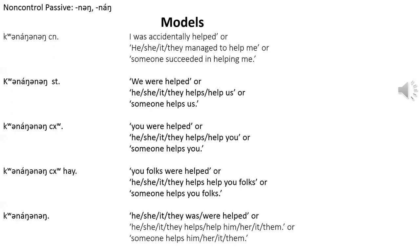Keep in mind that just as for the control passive, in each example it is the subject that is undergoing the action. Notice also that just as for the control passive, each of the column sentences has three possible English translations. The non-control passive implies that there is an actor who isn't in control. It is translated just as the other non-control forms in the object pronouns video: manage to, accidentally, or finally succeed in. In the models here, only the first has these ideas explicitly in the English translation.